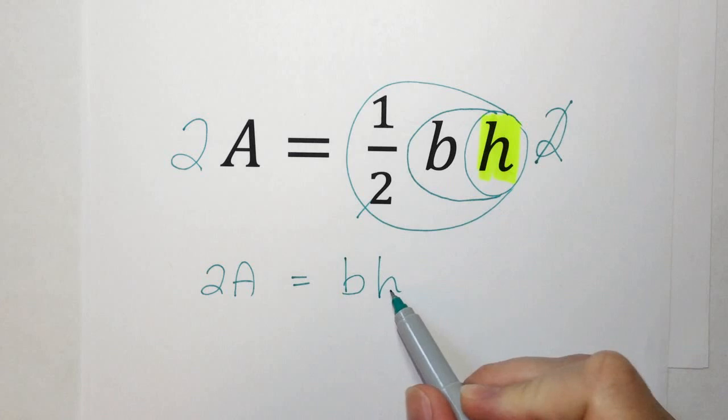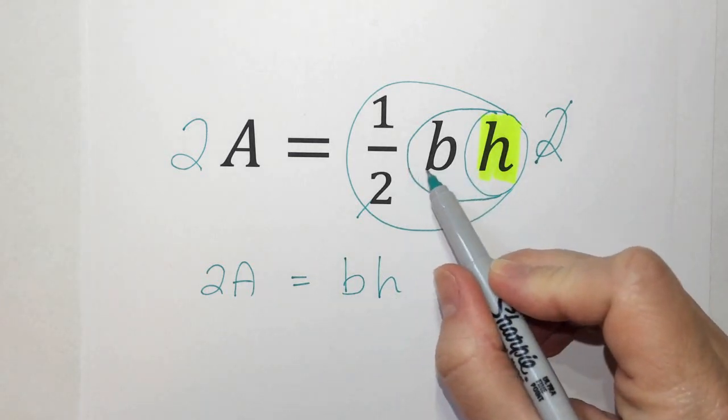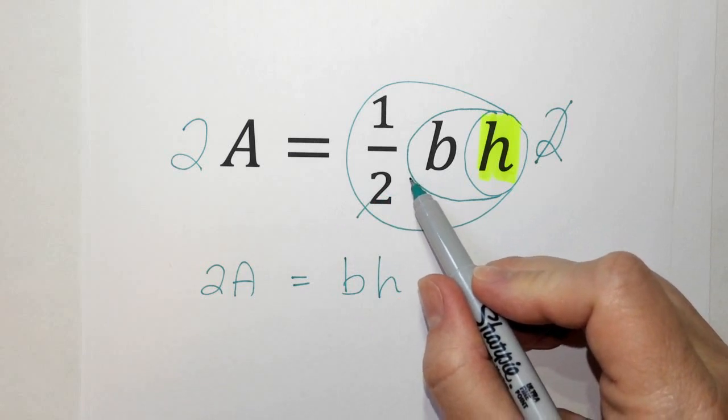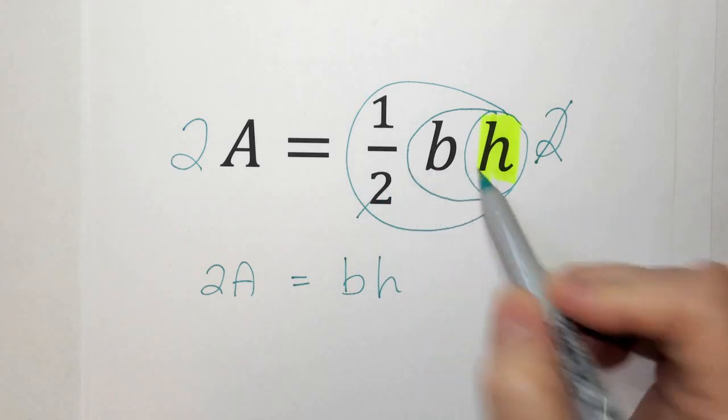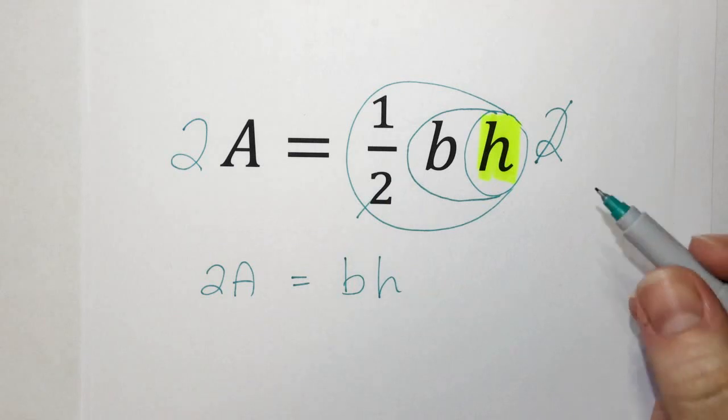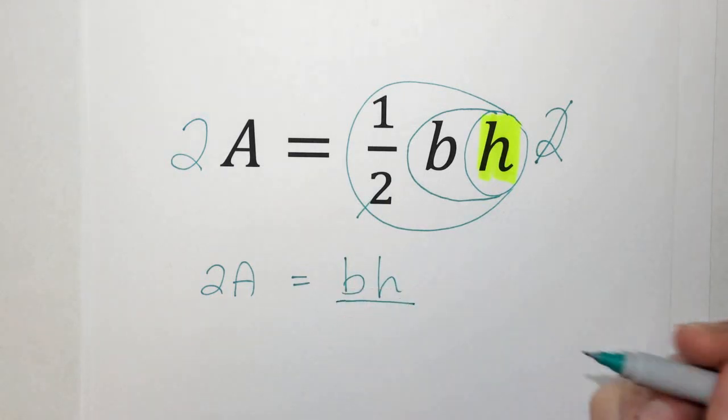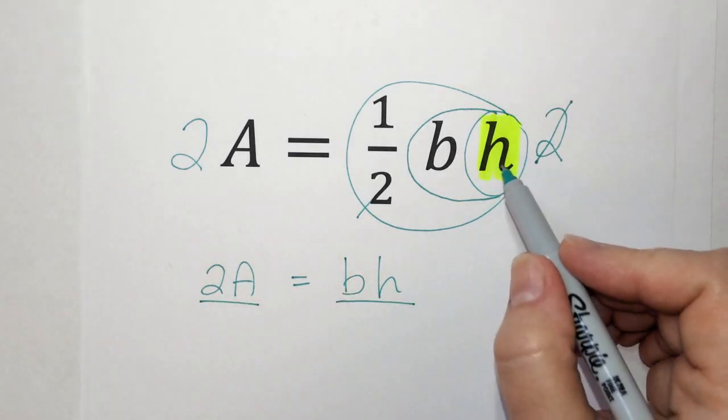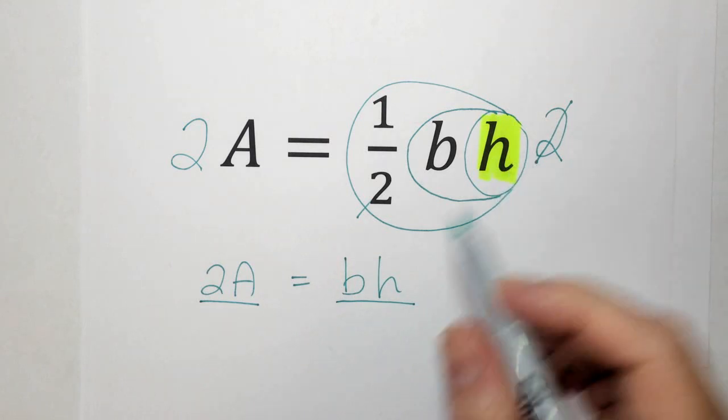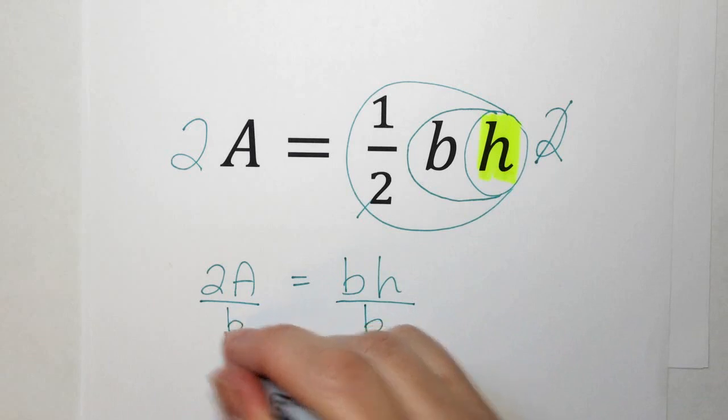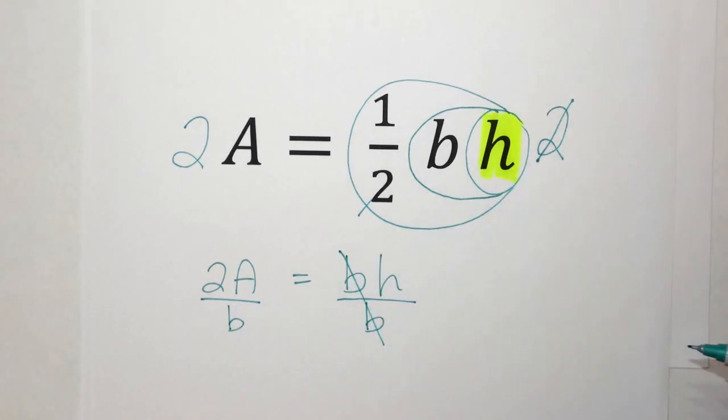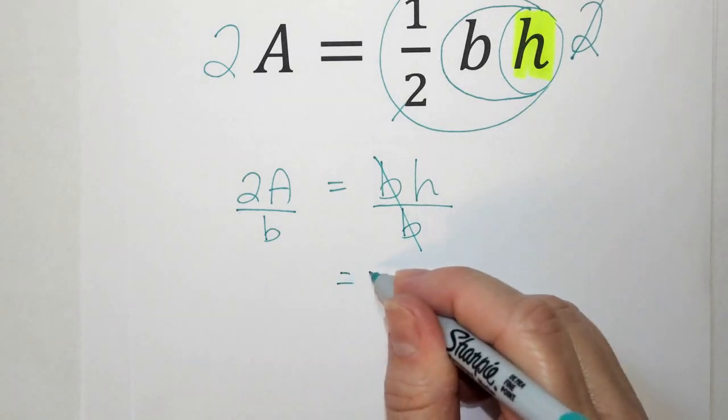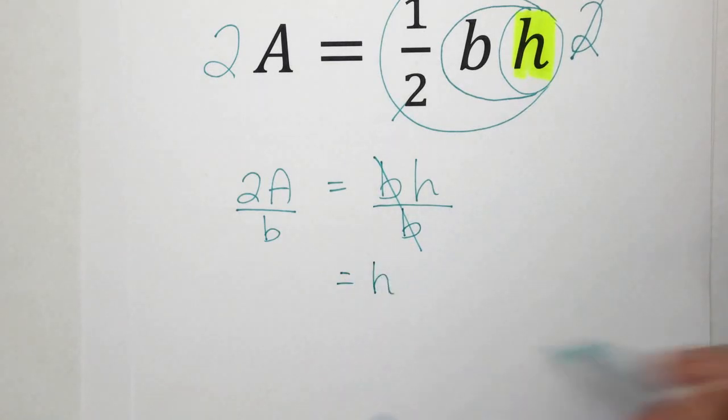Now I have 2A equals, my 1 half is gone now because it's 2 over 2 equals BH. I'm almost there, but I still have to get down to my h. What's happening here? We've already peeled off one layer of the onion. Now we're at the next layer. What's happening between my B and my H? Multiplication. So the inverse would be division. Undo it. And you have to choose here, are you going to put a B or an H underneath it? Well, you want to leave H by itself. That's the center of the onion. So do everything else. Divide both sides by B. Now my B's can cancel. And here I am. On the right side of my equation, I have an H. On the left side, I have 2A over B. This is called rearranging a formula.